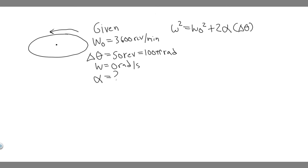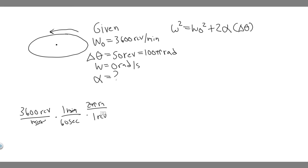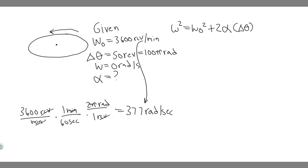Now let's convert 3,600 revolutions per minute to radians per second. First, multiply by 1 minute over 60 seconds to cancel the minutes, giving revolutions per second. Then multiply by 2 pi radians per revolution to cancel the revolutions, leaving radians per second. So we do 3,600 divided by 60 times 2 pi, which gives 376.99... — we'll use 377 radians per second as the initial angular velocity.